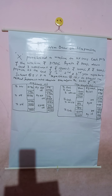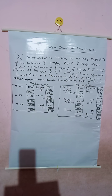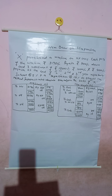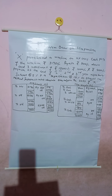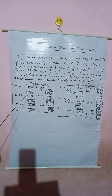First, we need to draw the machinery account. The machinery account is debited with the hire vendor's amount because at the time of making the agreement, X the hire purchaser purchased a machine from the hire vendor. So X purchased a machine on HP basis. Cash price is Rs. 31,960. The first entry is: machinery account is debited and hire vendor account is credited for Rs. 31,960.